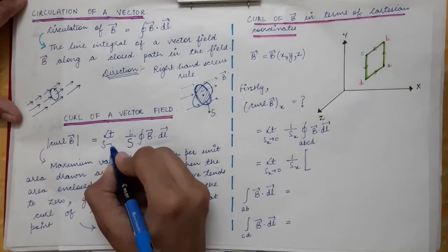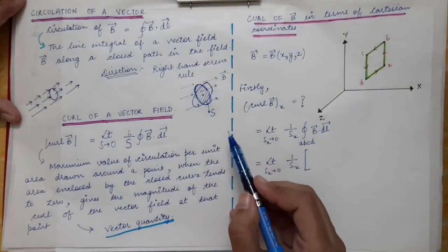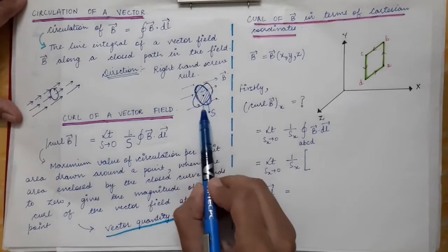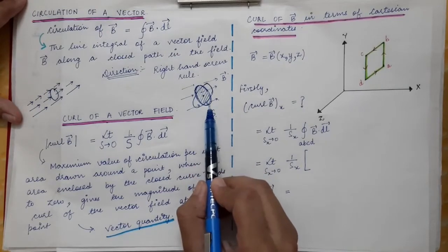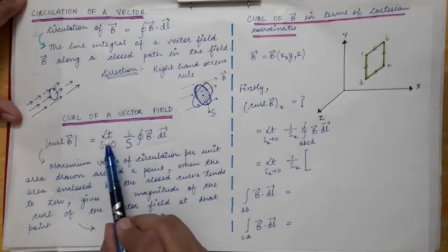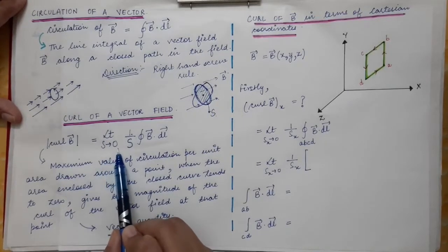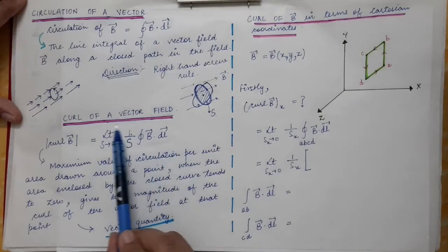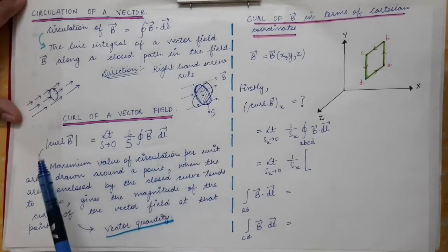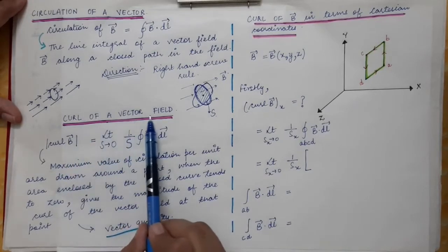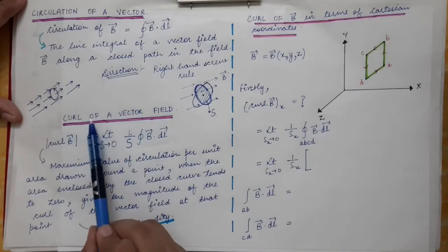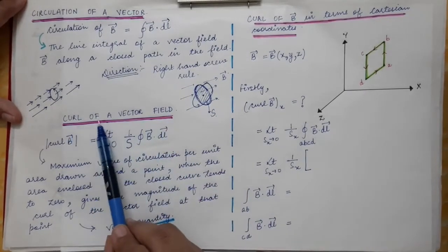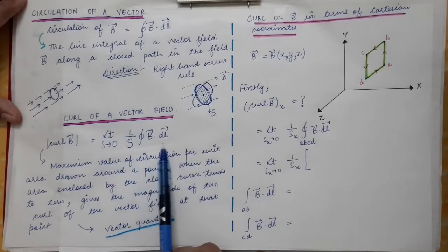We also use the limit of S approaching zero, because the curl of a vector field is defined at a single point in space. We draw a closed path enclosing a surface area, then approach that area to zero to get a single point. This gives us the magnitude of the curl of the vector field at that particular point.